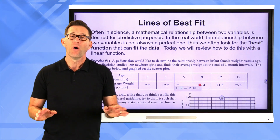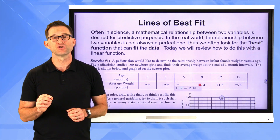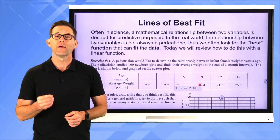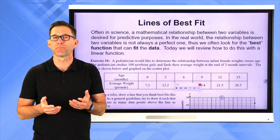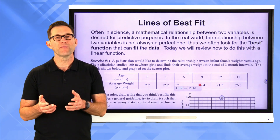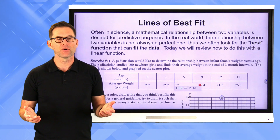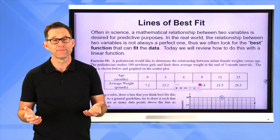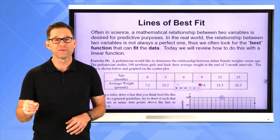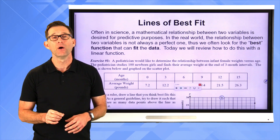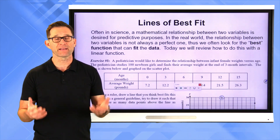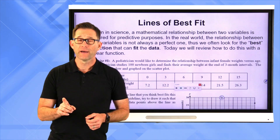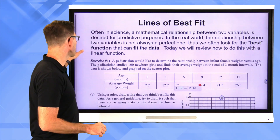Lines of Best Fit. Often in science, a mathematical relationship between two variables is desired for predictive purposes. In the real world, the relationship between two variables is not always a perfect one. Thus, we often look for a best function that can fit the data. Today we'll review how to do this with a linear function. As we go through this course, we'll also see how to fit data with a quadratic function and with an exponential function. Lines of Best Fit should have been covered back in Algebra 1.